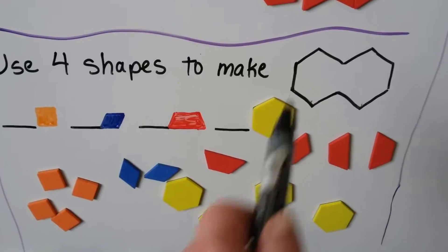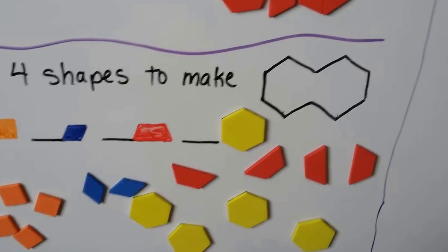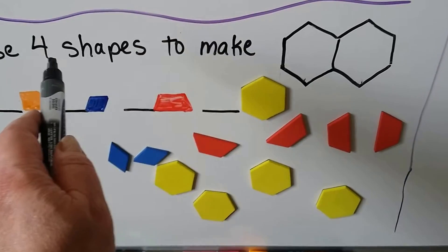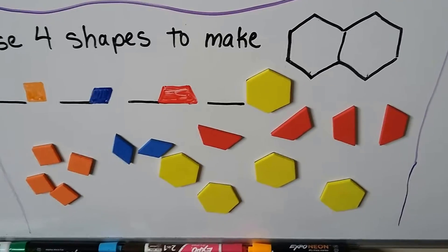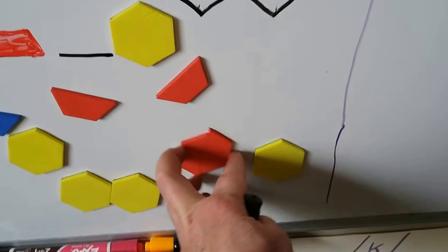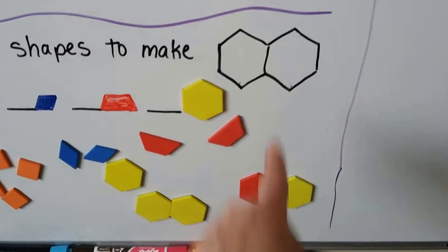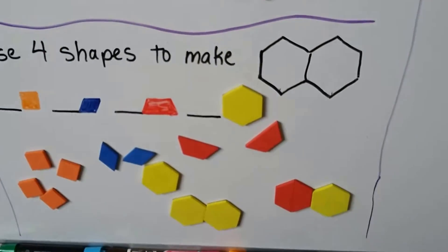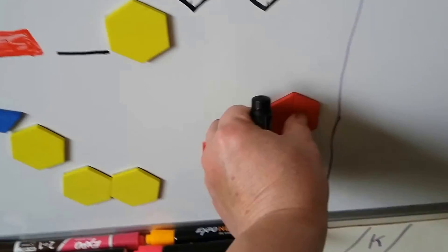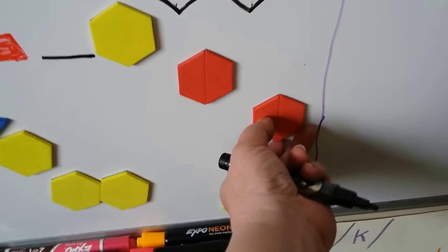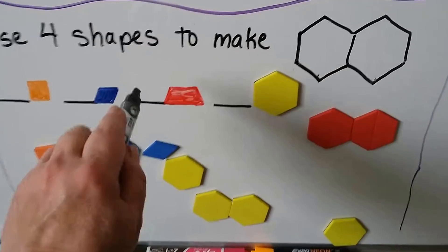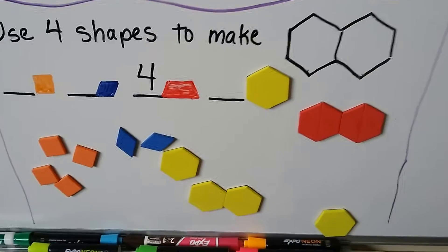We need to use four shapes to make this shape. If I draw a line here, I can see two hexagons, but we need four shapes, not two. We could use one hexagon and two trapezoids, but that's only three shapes. What we need to do is put four trapezoids together — now it looks like that shape, and we have one, two, three, four shapes. Four trapezoids — it worked.